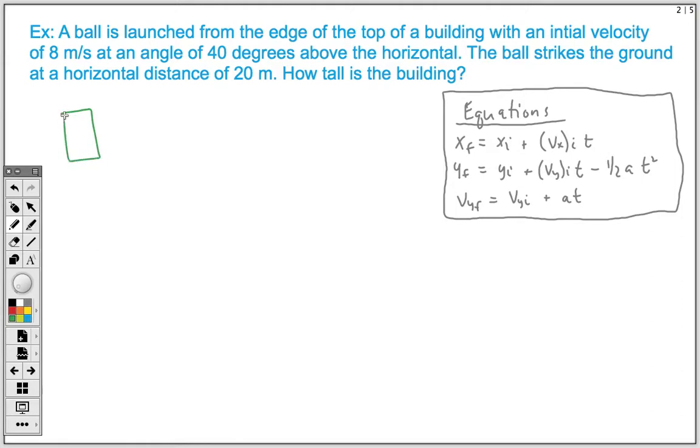And so here's our building. We have a ball. It's launched from the edge of our building. It's traveling at 8 meters per second and it has a 40 degree angle. That ball ends up landing on the ground.